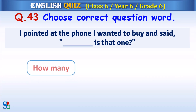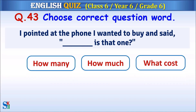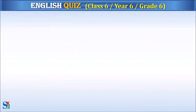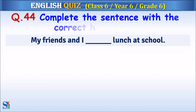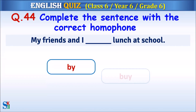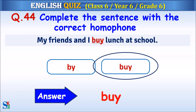Question 43: Choose the correct question word. The answer is 'how much?' Question 44: Complete the sentence with the correct homophone. The answer is 'buy.'